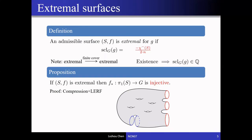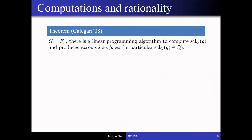Since extremal surfaces are nice, we would like to understand which groups and for which elements such extremal surfaces exist, and when the stable commutator length is rational. The first breakthrough in this direction was made by Dan Calegari, who showed that for free groups there is a linear programming algorithm to compute the stable commutator length for any given element, and the result of the algorithm produces extremal surfaces. In particular, the stable commutator length is always rational for free groups.